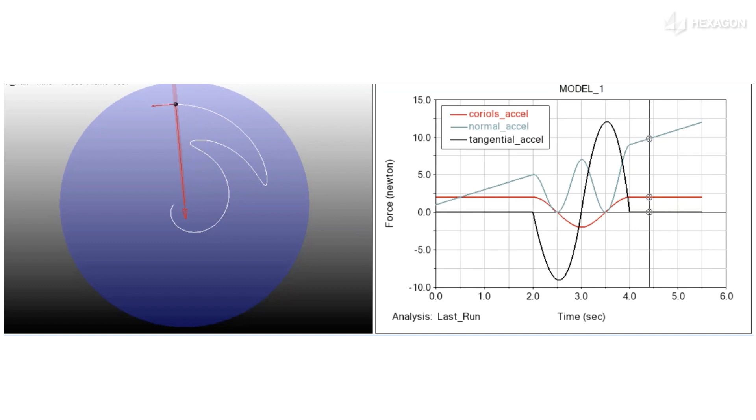After the disturbance, the tangential acceleration is zero because the rotational speed is constant. The Coriolis component is constant because both the rotational and walking speeds are constant. The normal acceleration, however, is increasing because the radial distance from center is increasing.